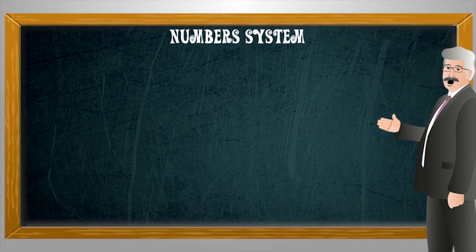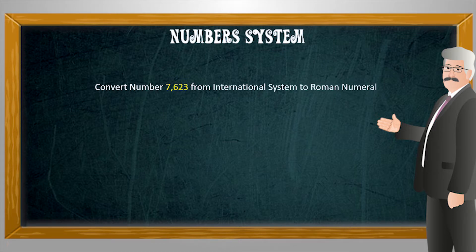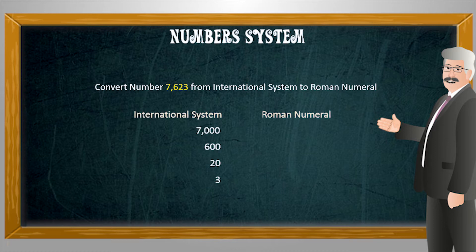Let's try to understand the conversion process of Roman numeral to other systems and vice versa with the help of this example. Try to convert number 7623 from international system to Roman numeral system. To approach this problem, first try to separate each digit and write place values of each digit sequentially.